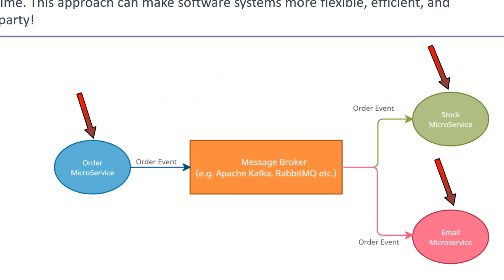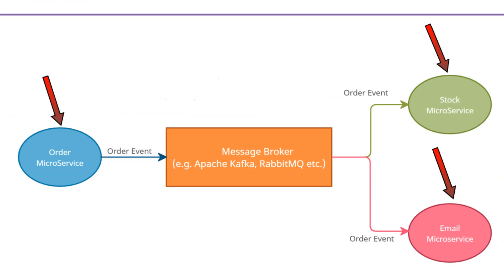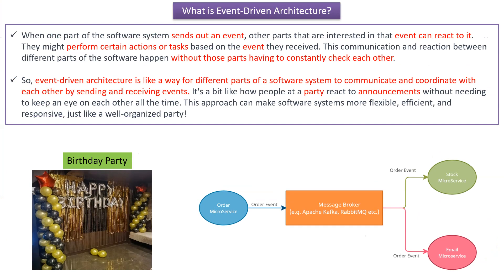So, event-driven architecture is a way for different parts of a software system to communicate and coordinate with each other by sending and receiving events. It is a bit like how people at the party react to the announcement without needing to keep an eye on each other all the time. This approach can make software systems more flexible, efficient, and responsive — just like a well-organized party.